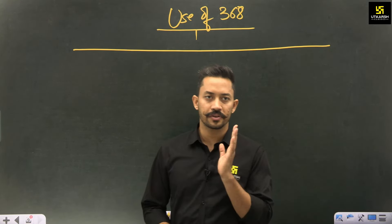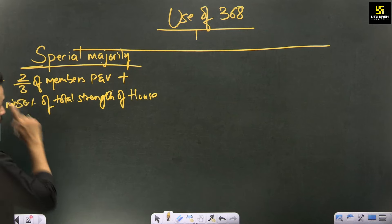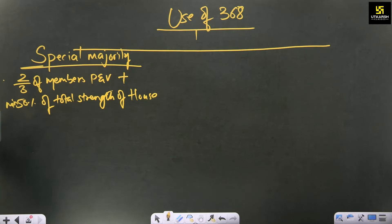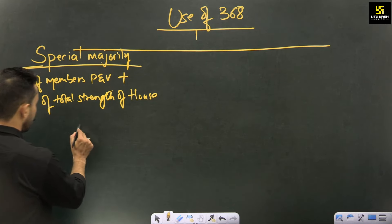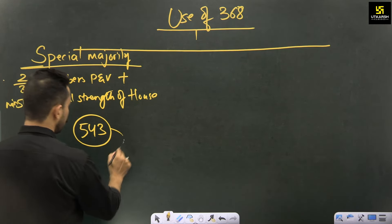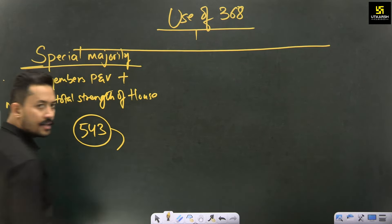Special majority means two-thirds of the members present and voting, plus a minimum of 50% of the total strength of the house. Both conditions must be fulfilled. For example, let us say Lok Sabha total strength is 543. Suppose 330 are present, and 30 abstain. So present and voting are 300. Two-thirds of 300 is 200, so minimum 200 must support the bill.